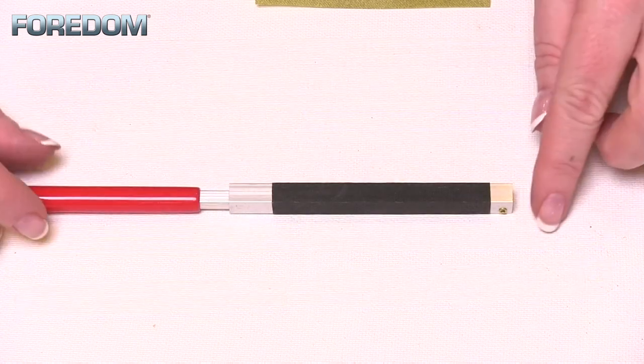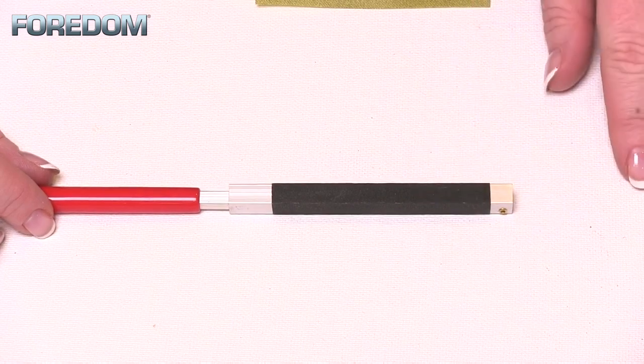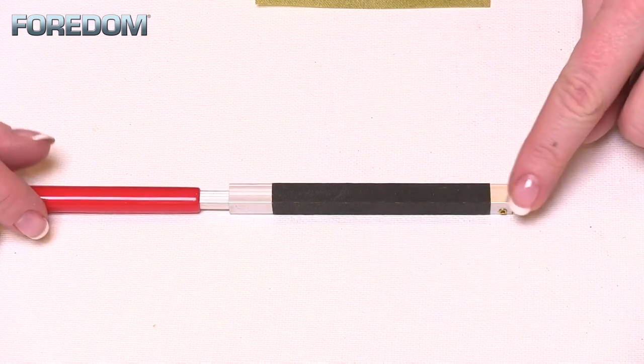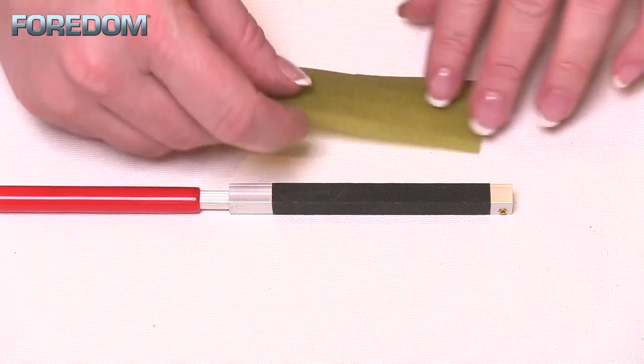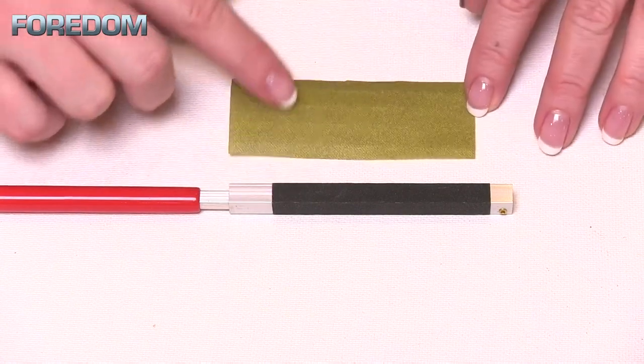When you first receive your sanding holders, it will have a piece of sandpaper on it you can use as a guide for cutting others, or you can just measure out a one and a half inch by three and a half inch piece.